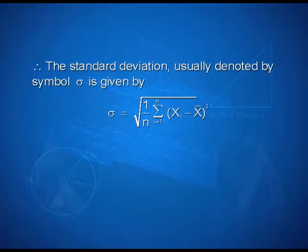Therefore, the standard deviation, usually denoted by sigma, is given by sigma is equal to the square root of 1 upon n into summation i varying from 1 to n of xi minus x bar the whole square.